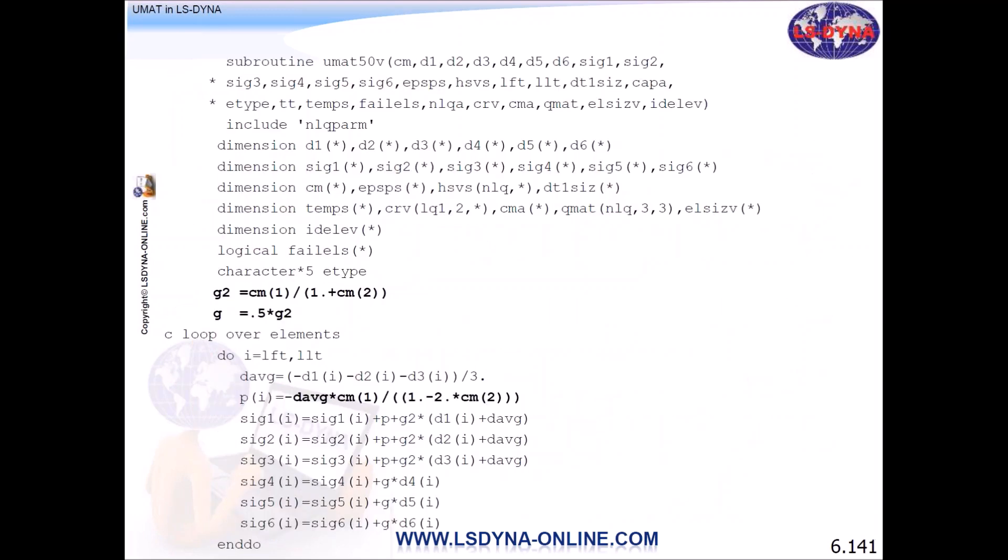Now what we do in the vectorized code, we have a do loop. So do I, LFT to LLT, from 1 to 136, for example, for a PC. And then we calculate the volumetric strain, we calculate the pressure, and we calculate the stress components for each element.